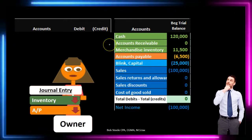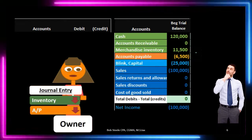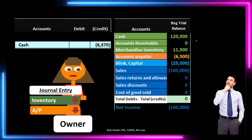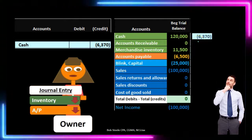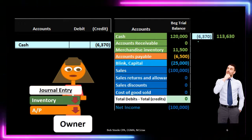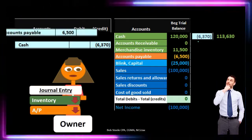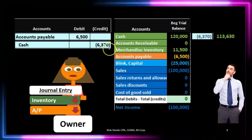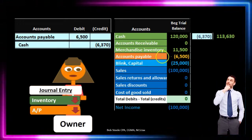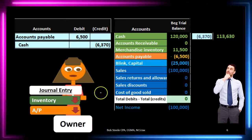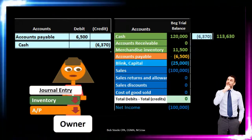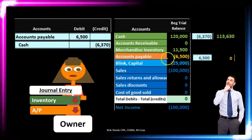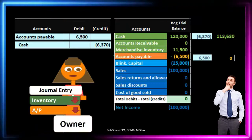Now we can record the transaction and post it to the trial balance. Cash is going to go down by the amount we pay — six thousand three seventy — bringing cash down from one hundred twenty thousand to one hundred thirteen thousand six thirty. The other side of the transaction is accounts payable, but it will be for the entire amount owed — six thousand five hundred — not just the cash paid, because we're reducing it by the full discount. We debit accounts payable for the full six thousand five hundred, bringing it to zero.